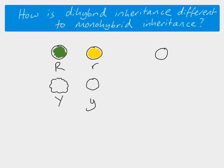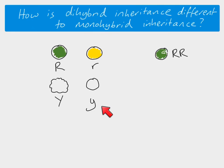So if we were to take an example and say we've got a smooth green pea, then if we think about the possible genotypes it could have: if it's green, it has to have at least one of the dominant alleles, so it has to have at least one big R. It's smooth, and smooth is recessive, so to be smooth it has to have two copies of the recessive allele — so it must be little y, little y.